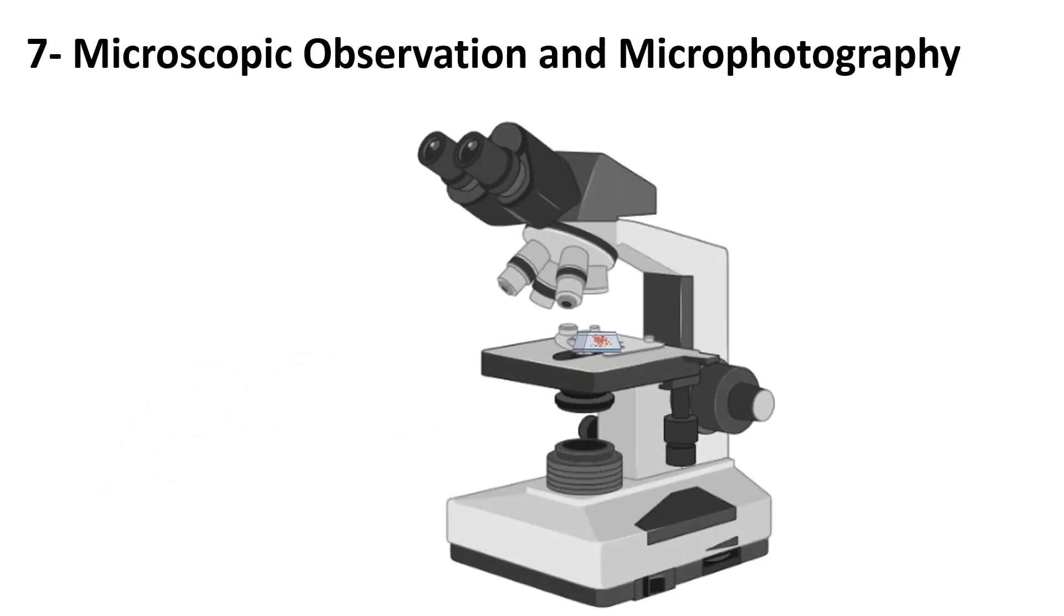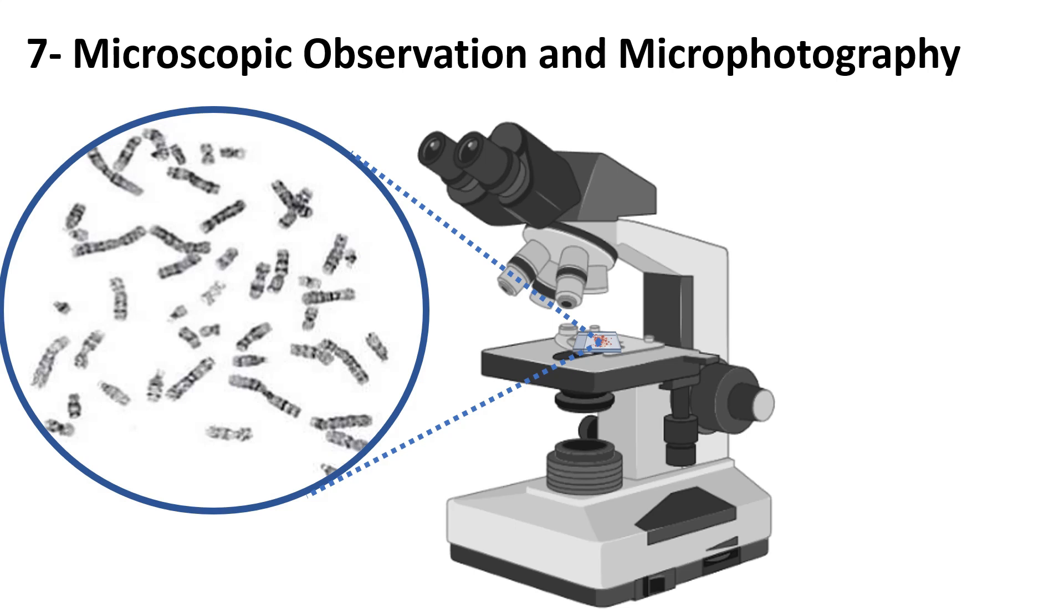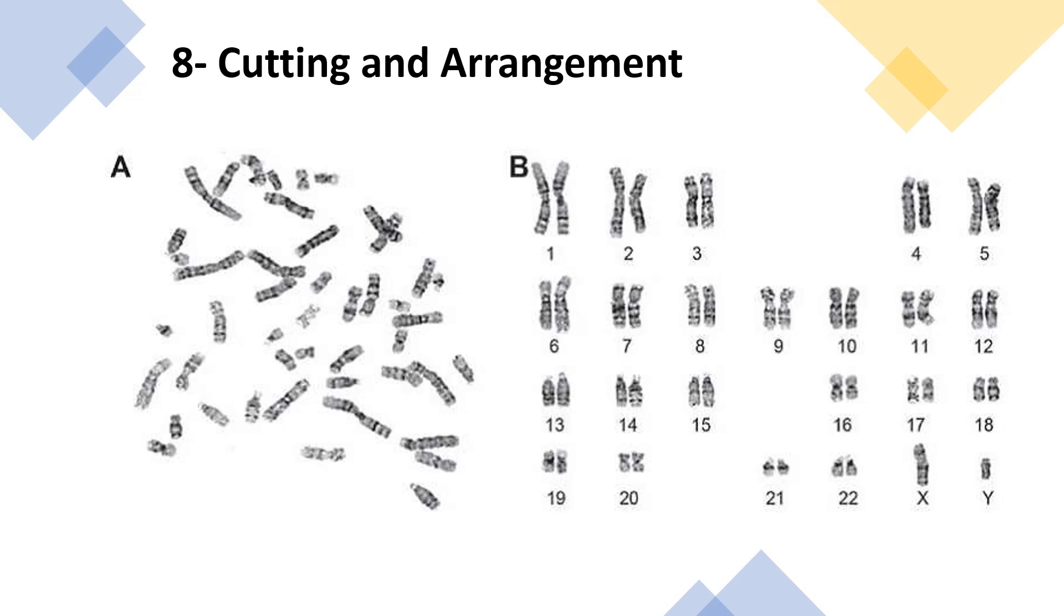The final step is cutting and arrangement. Once chromosomes are stained, the slide is put under the microscope for analysis. A picture is then taken of the chromosomes. By the end of the analysis, the total number of chromosomes will be determined and the chromosomes arranged.